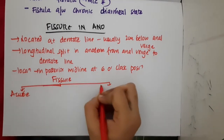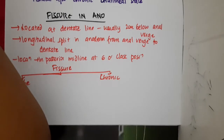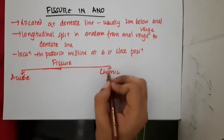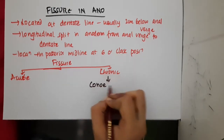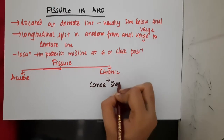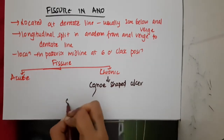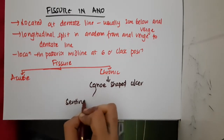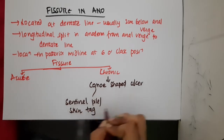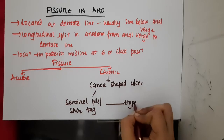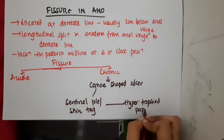In chronic fissure, there is a triad which is present. First, there will be an ulcer — canoe-shaped ulcers will be present. Second, there will be a sentinel pile, also called a skin tag. Third, hypertrophied papillae will also be present.